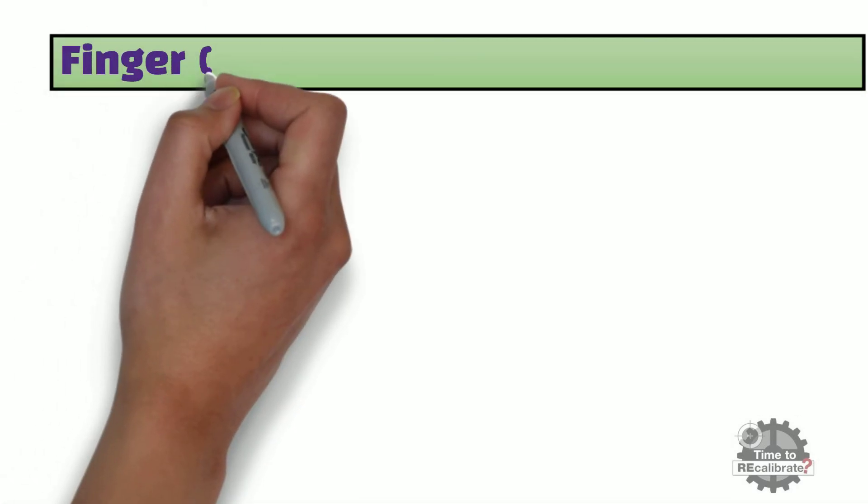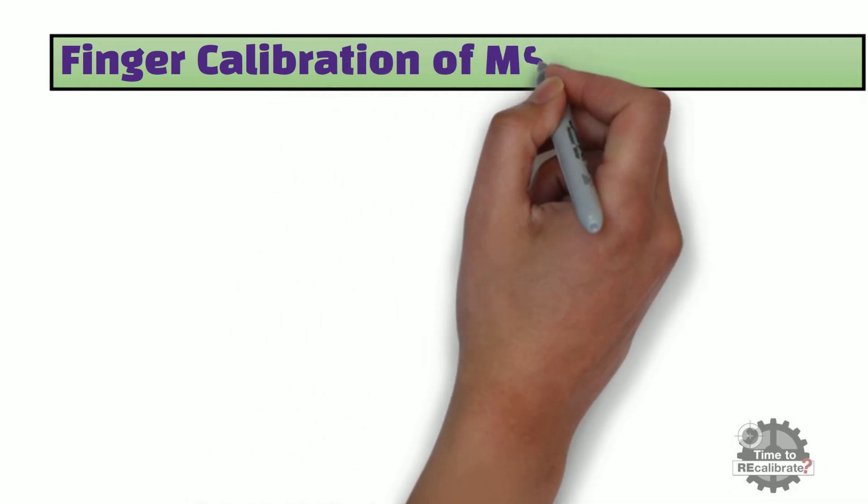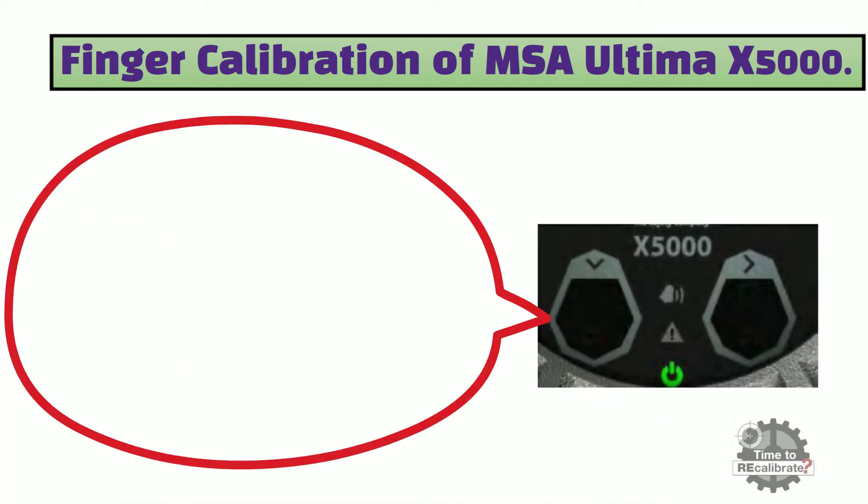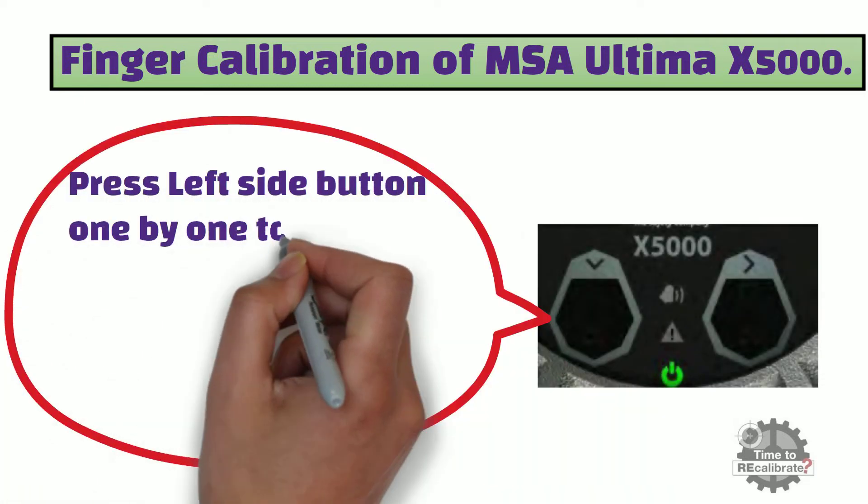In this section, you are going to learn about finger calibration of MSA Ultima X5000. As you can see from the picture, press the left side or down button one by one to scroll down in the menu function.